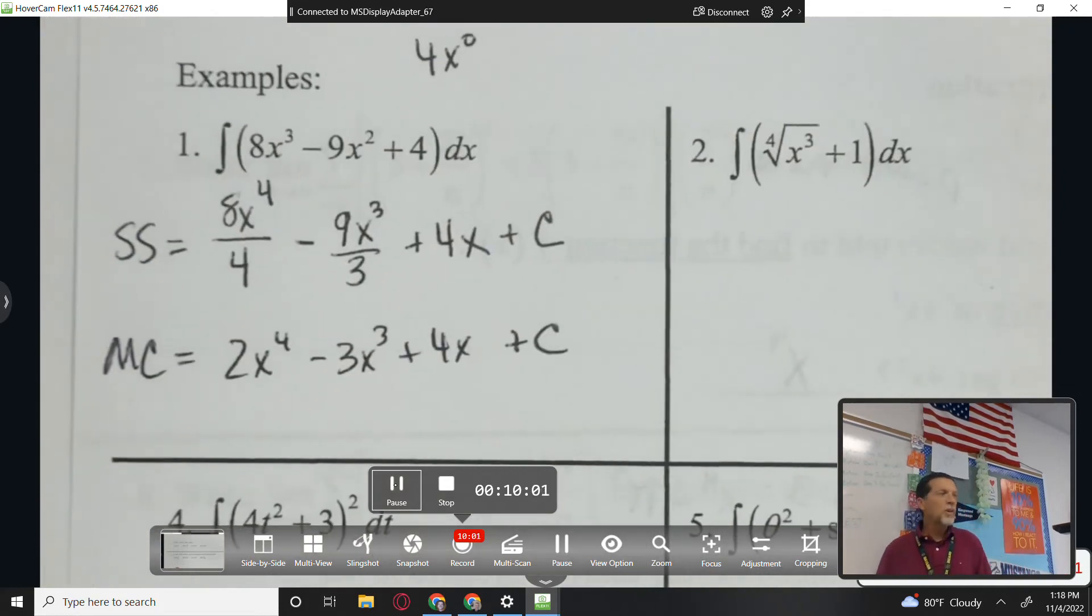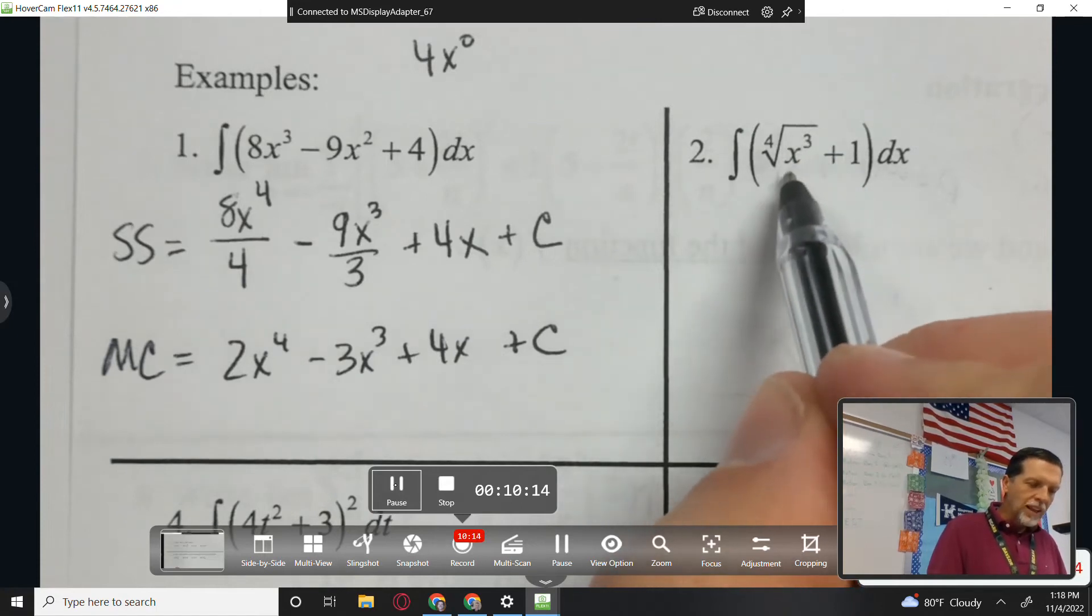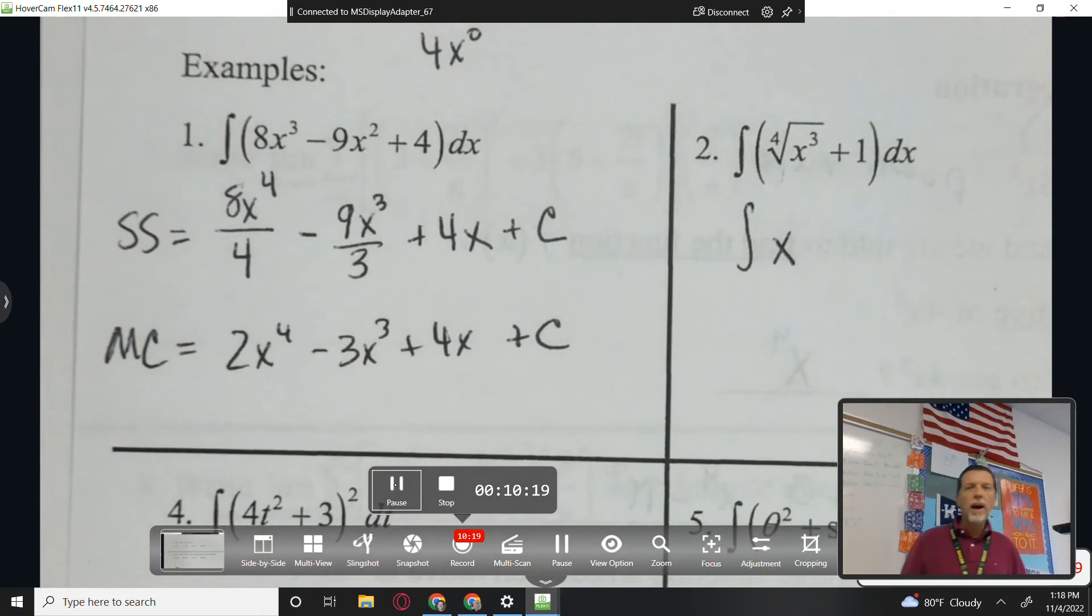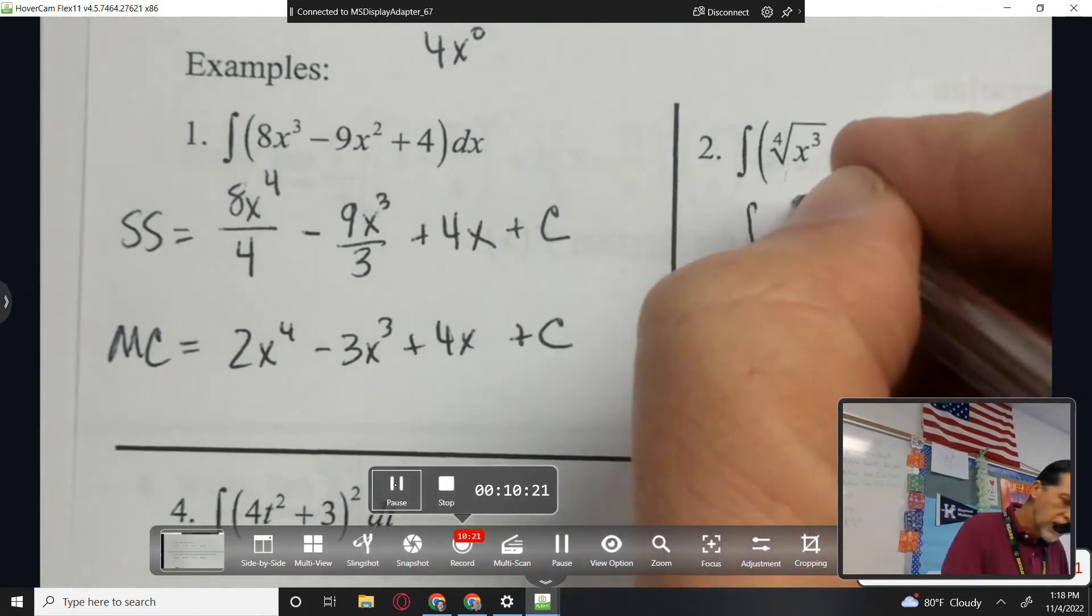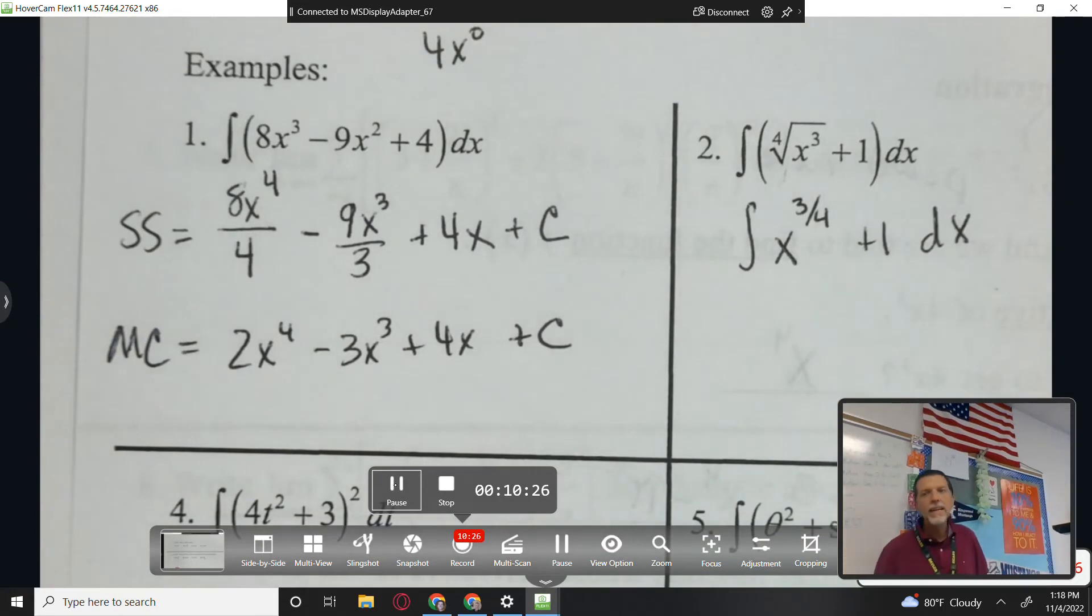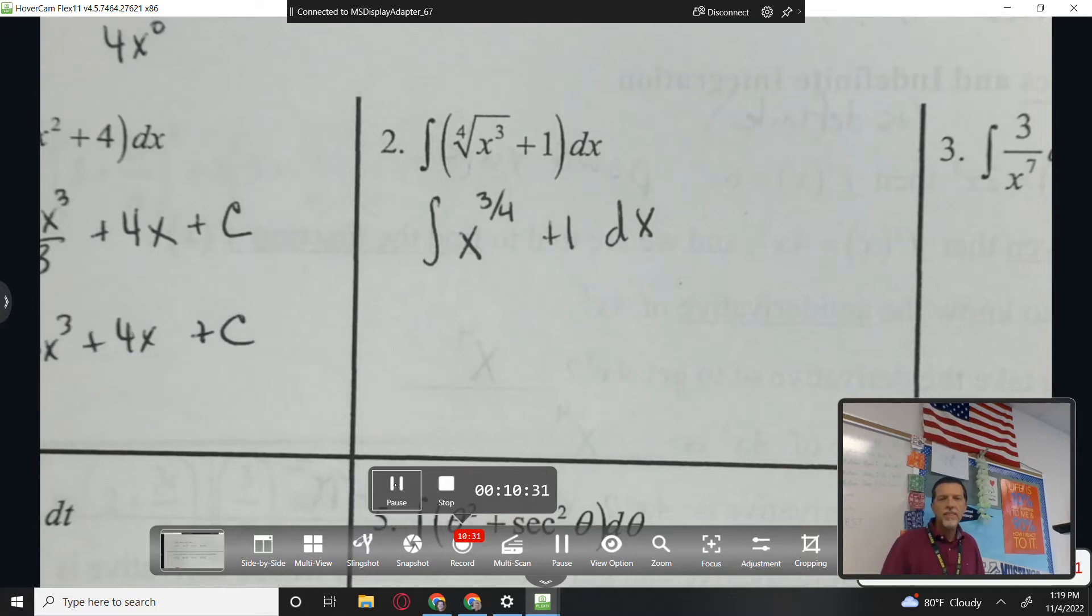Also, pretty easy to check your answers on these. What do you need to do to check your anti-derivatives? Take a derivative, right, take a derivative. And you should get back to where you started. All right, we don't like roots, so I'd like to rewrite that as a power. So power over root, x to the three-fourths plus one dx. That's, I haven't done any calculus yet, right? That's just algebra.